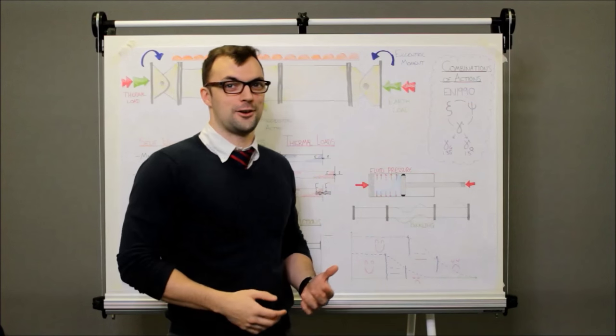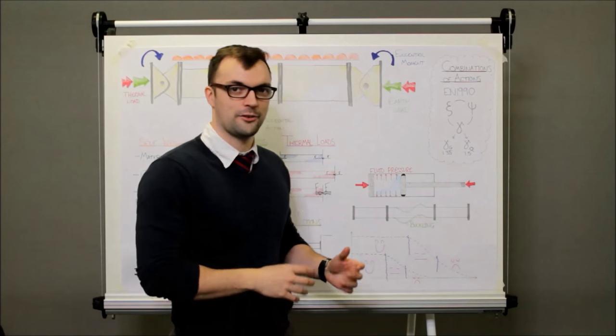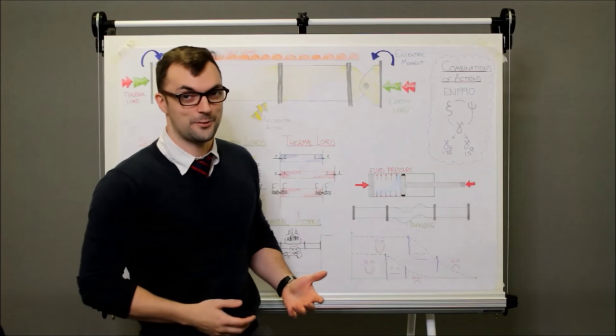EA 1990 often referred to as Eurocode 0 it gives us all kinds of combinations of actions and effects and it tells us partial factors to apply to everything.